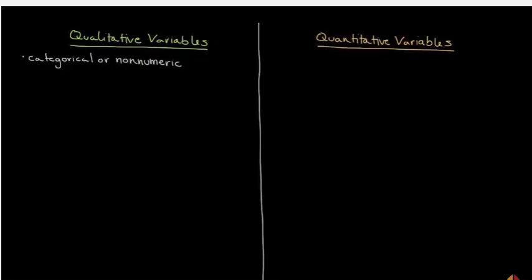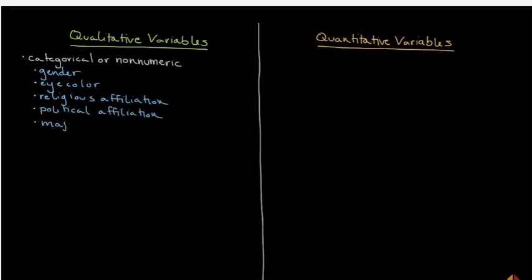Common qualitative variables can include things like eye color, gender, religious affiliation, political organizations that you affiliate with, and even your actual major. The important thing, the commonality here with a qualitative variable, is that they are non-numeric in nature. They're not describing the amount of something, but rather they're describing a type of something.